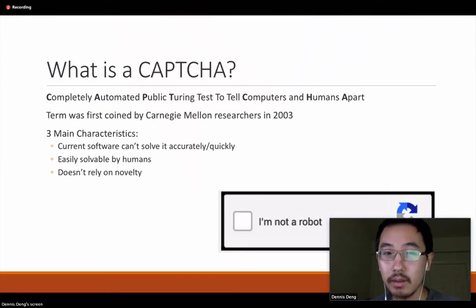In this paper, they described CAPTCHA as three main characteristics. It has the characteristic that current software can't solve it accurately or quickly, it should be easily solvable by humans, and it doesn't rely on novelty. So if you look at the bottom right, a simple checkbox that says 'I'm not a robot' technically doesn't qualify as a CAPTCHA, because even though it's easily solvable by humans, current software can solve it pretty quickly. And if it can't, it usually is because it hasn't encountered it before, and this is where the novelty comes in.